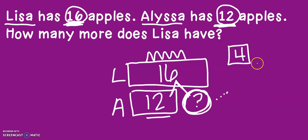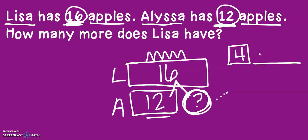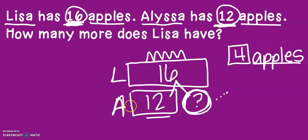So my answer is four, and then I look for my label: apples. In this problem, I know how many Lisa has, how many Alyssa has, and I was missing my circle.